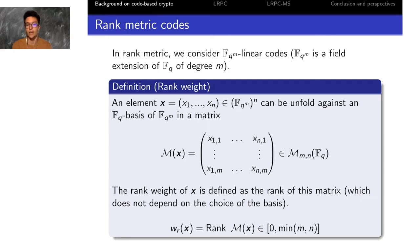In this particular setting, an element x, a word x with n coordinates in FQm, can be unfolded against an FQ basis of FQm into a matrix with m rows and n columns. We define the rank weight of the word as the rank of this matrix.